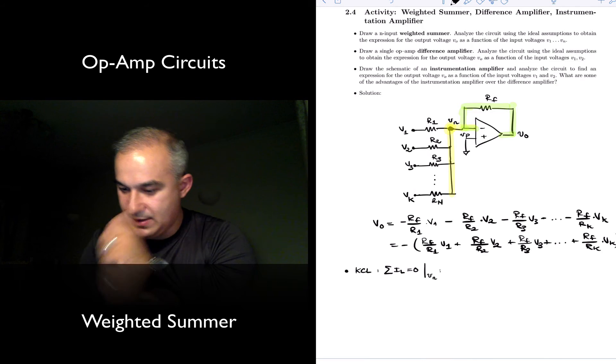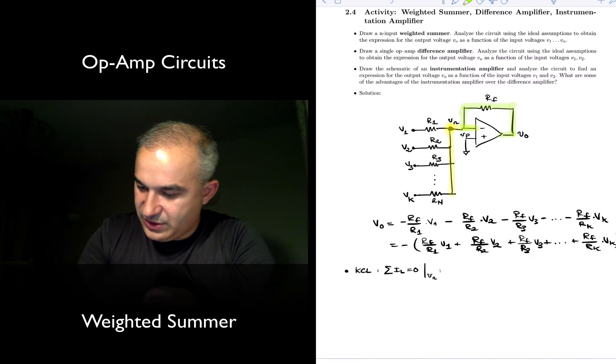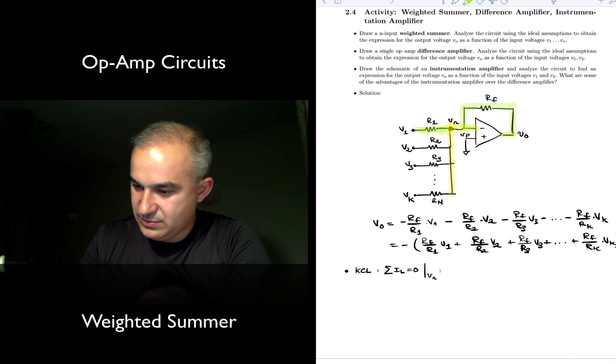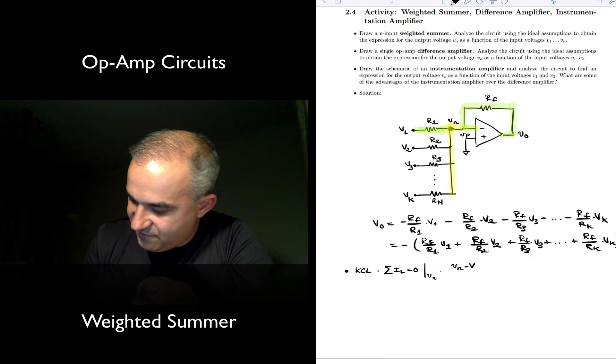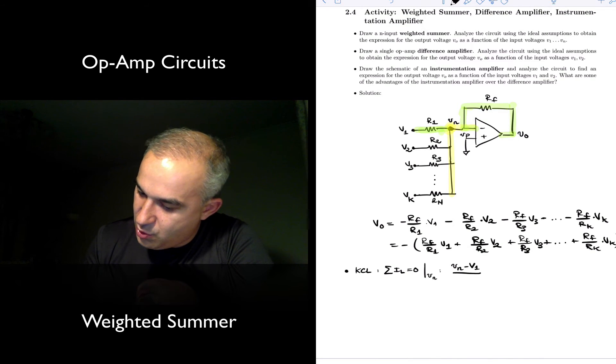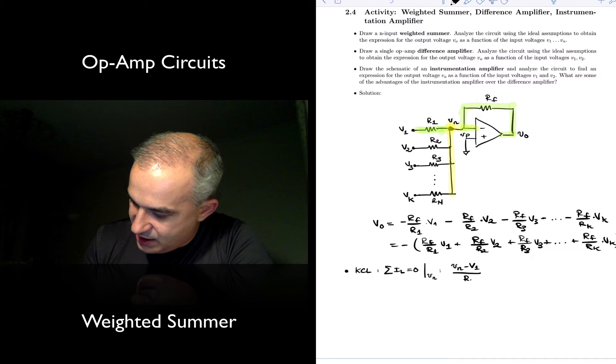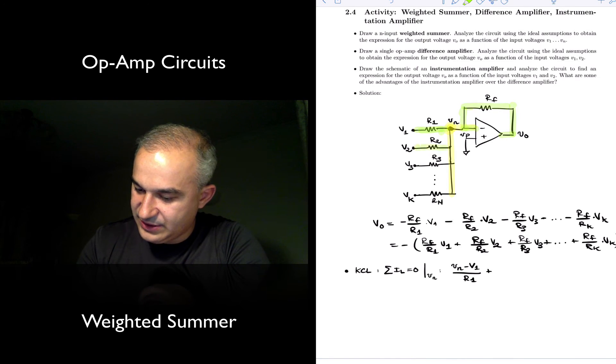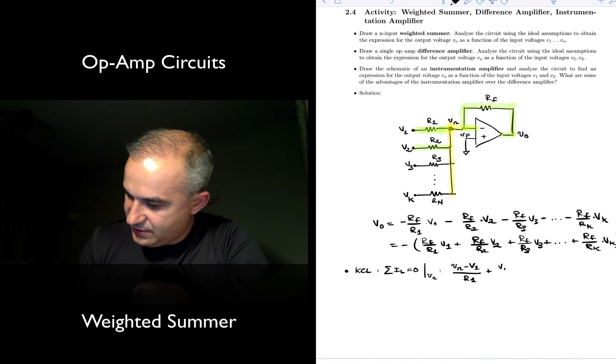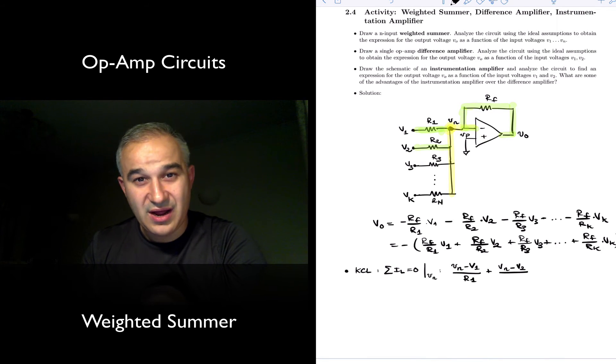So let's do the analysis there. So we have the current leaving this way which will be Vn minus V1 over R1 plus we have the current leaving this node, Vn minus V2 over R2, plus.